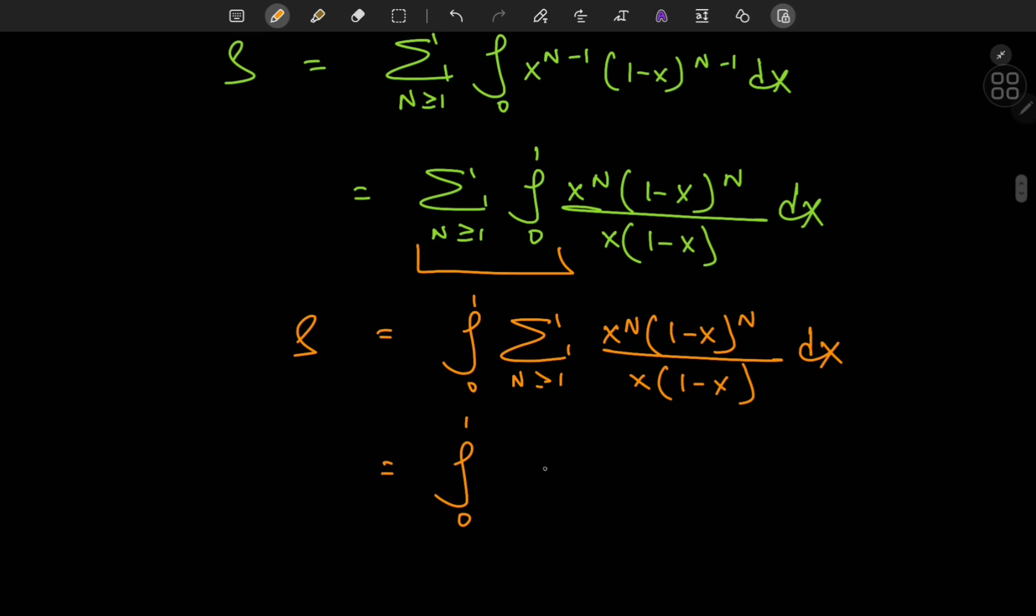As in we can write this as the integral from 0 to 1 of 1 by x times 1 minus x times the sum over n of x to the n times 1 minus x to the n, integration with respect to x.